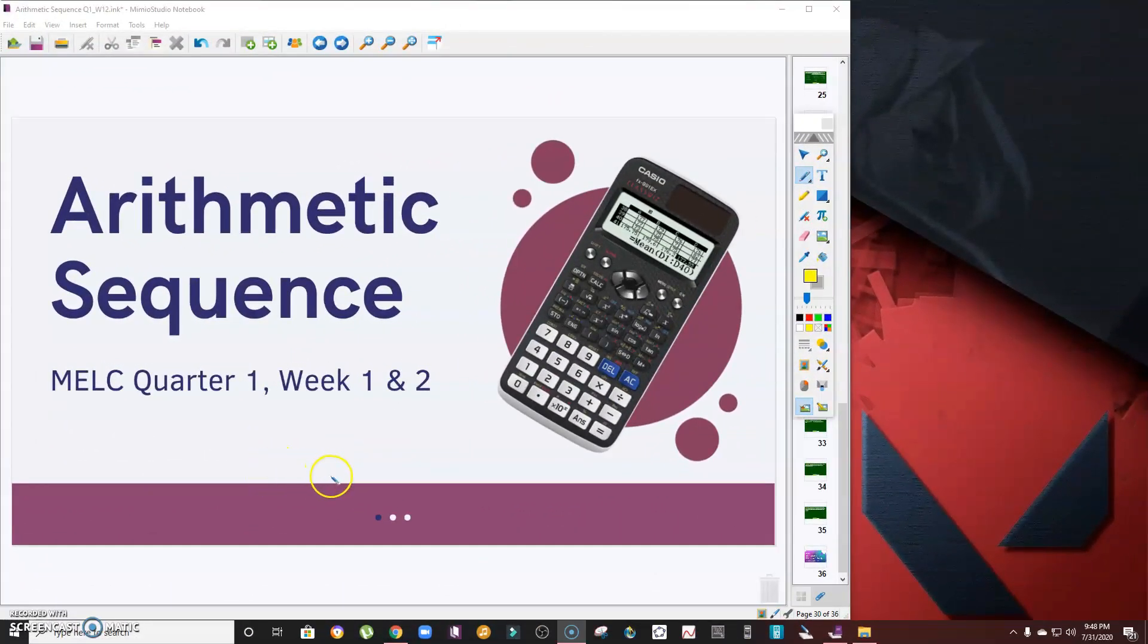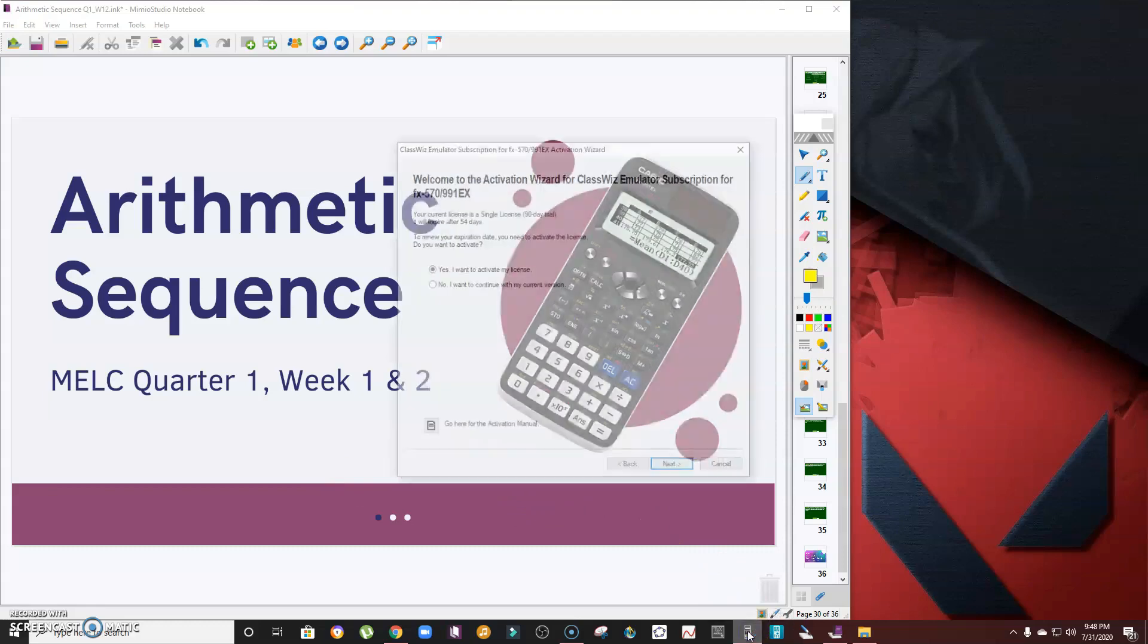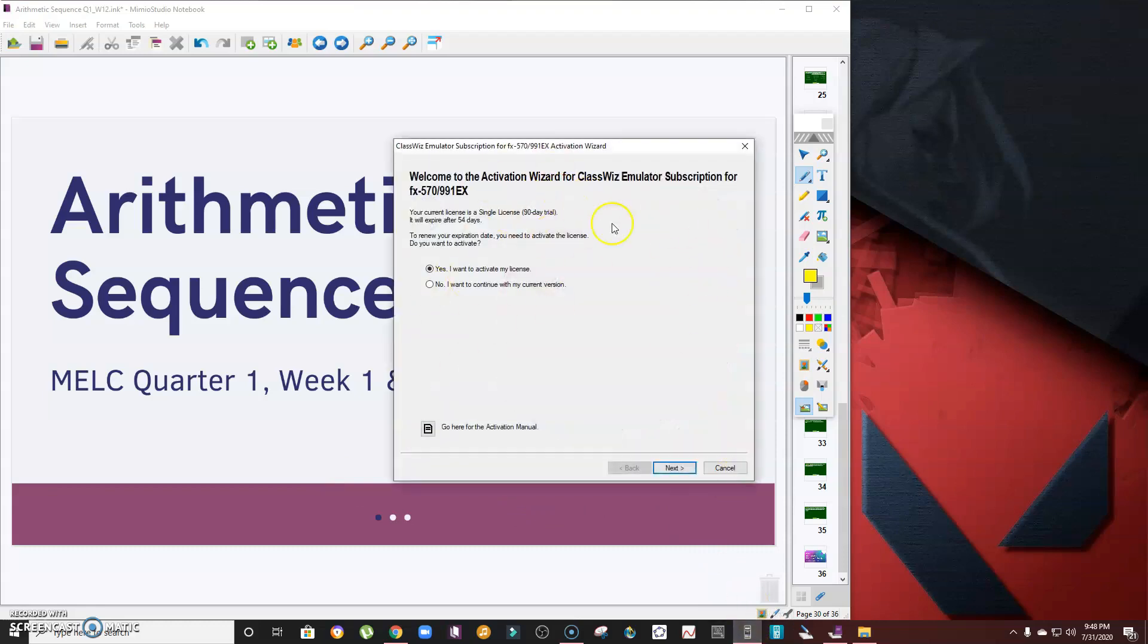After downloading and installing your emulator, this is how it should look like. I put the icon of my ClassWiz on the taskbar. If I'm going to run it, a dialog box will appear. As I said, it's only 90 days, so I installed it one month ago and only have 54 days left. Just click no and then press next.